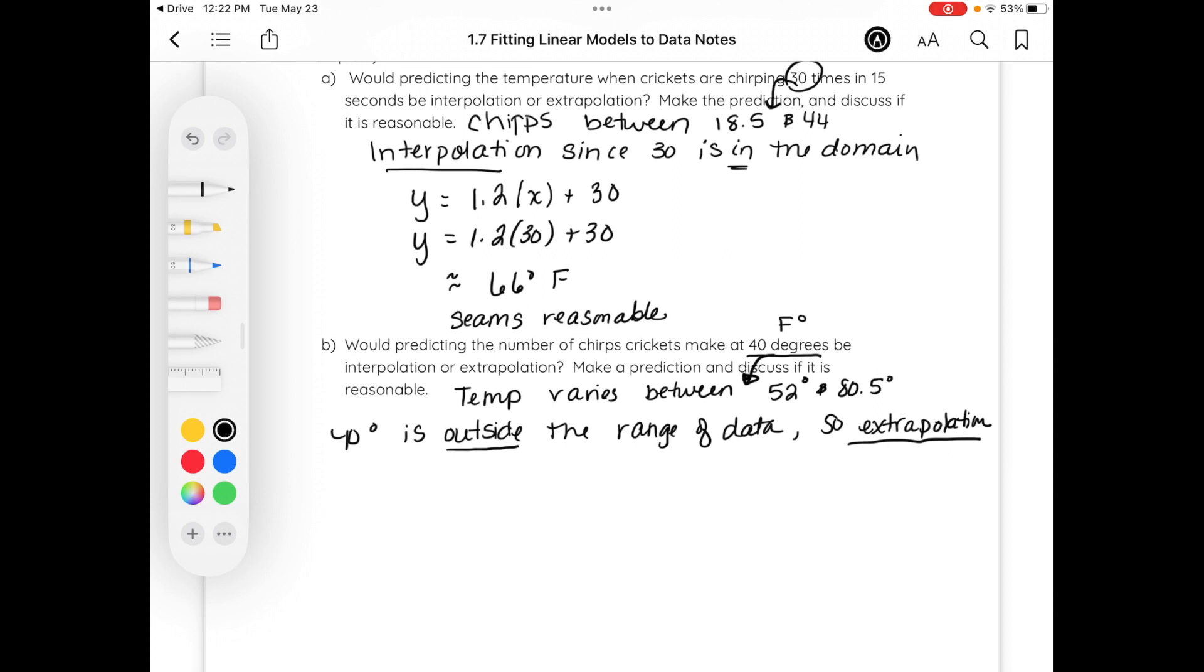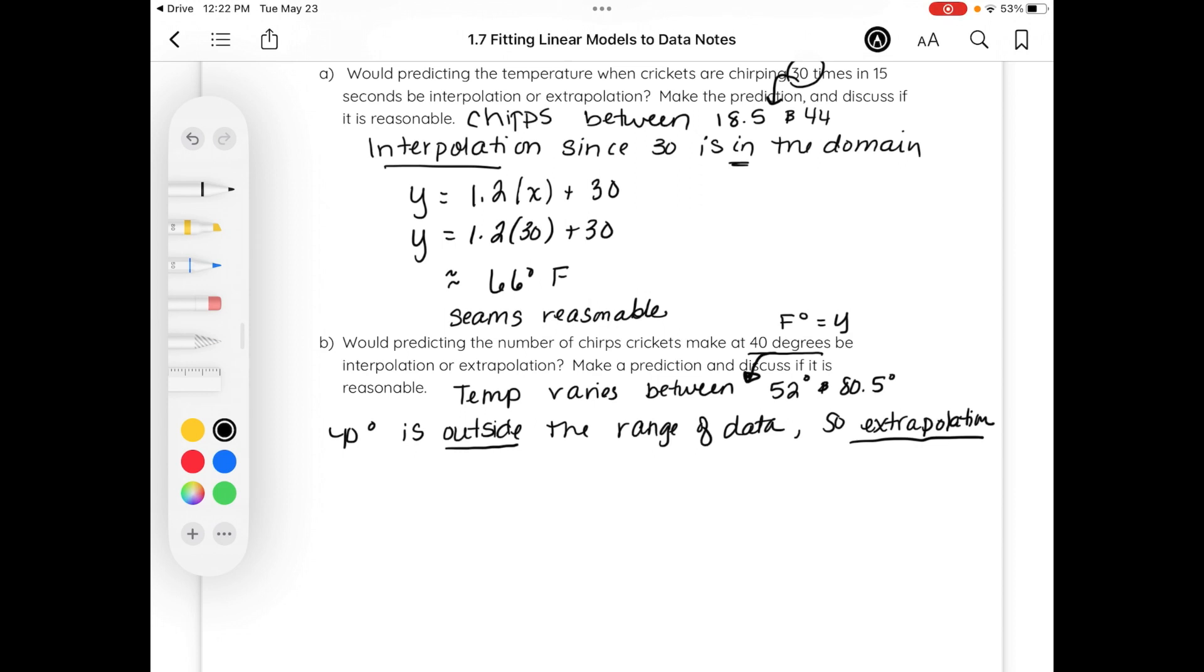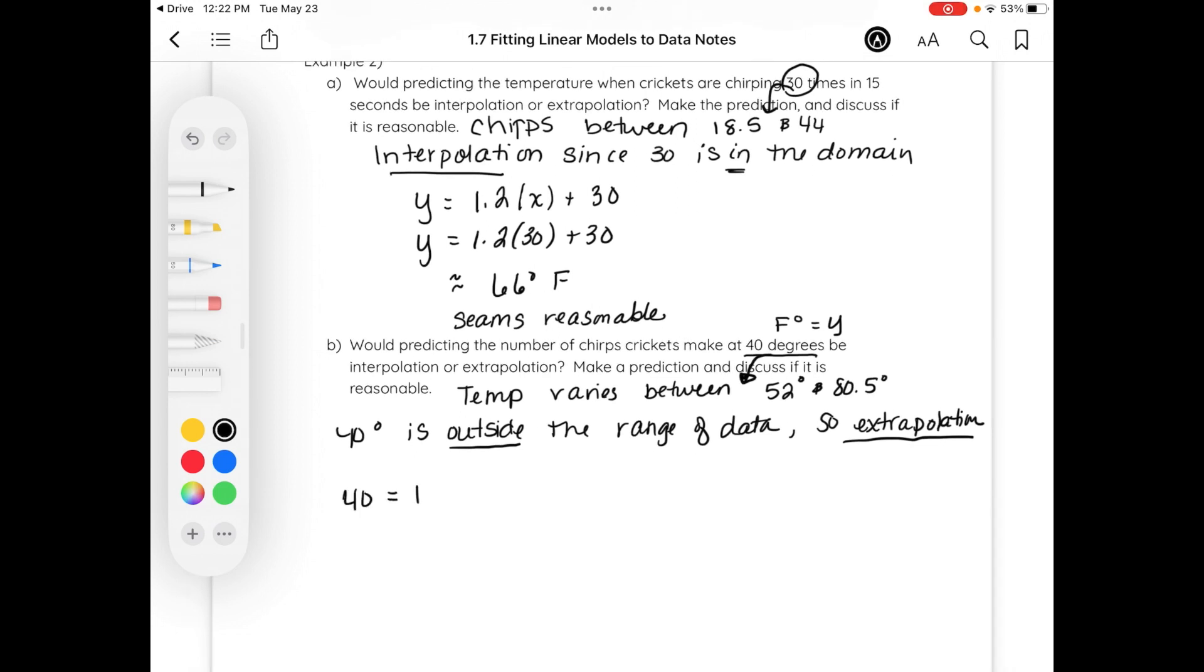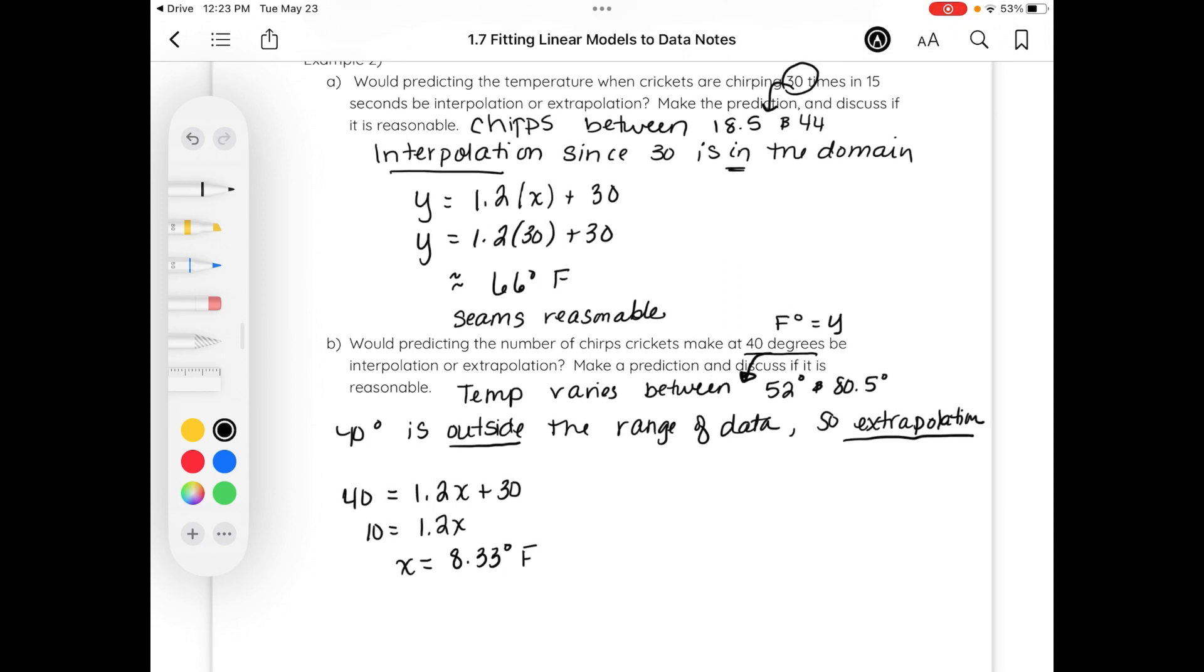We could go ahead and solve. So this time our degrees value is represented by y. Thus, 40 is 1.2 times the number of chirps plus 30. When I subtract 30 from both sides and divide by 1.2, x is about 8.33 degrees Fahrenheit. While this may be possible, we have no reason to believe our model is valid outside of the domain and range. This is what we call model breakdown.